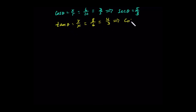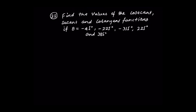In terms of sine, cosine, tangent, secant, and cotangent, the value equals 1 over the corresponding ratio. Find the values of cosecant, secant, and cotangent functions if theta equals negative 45 degrees.